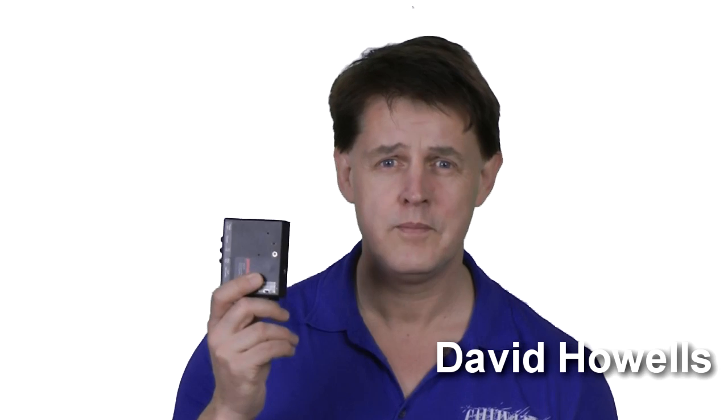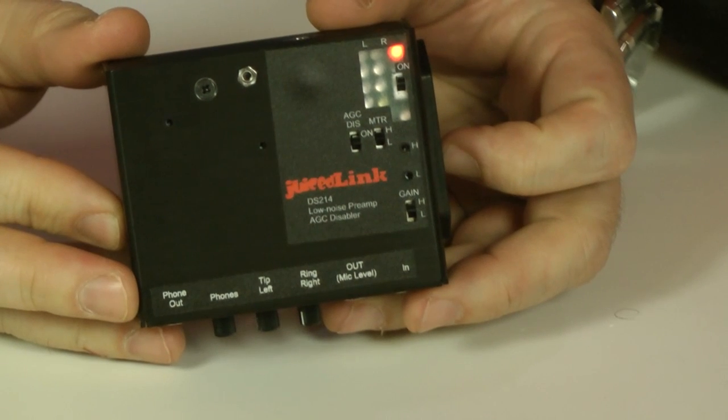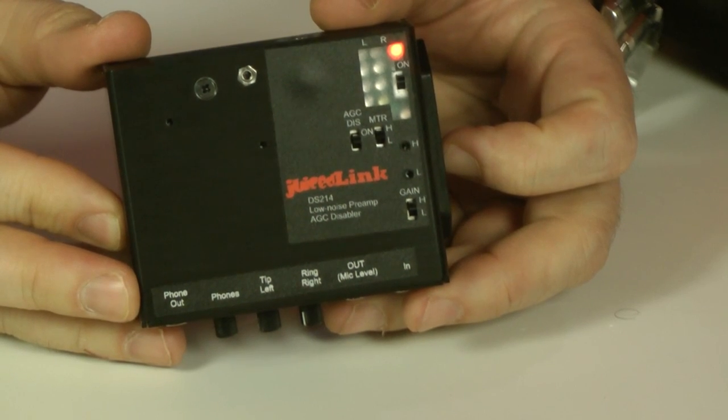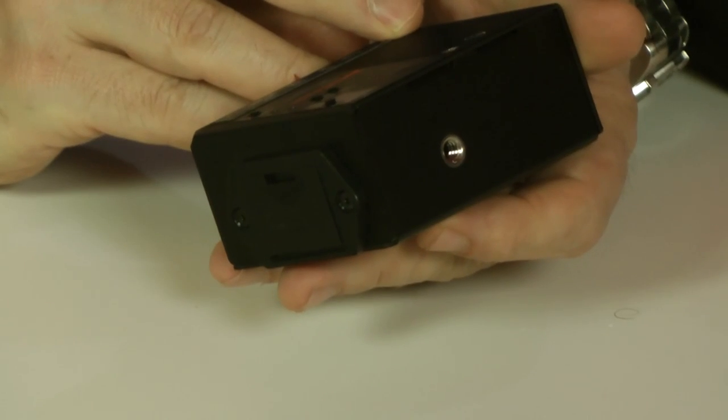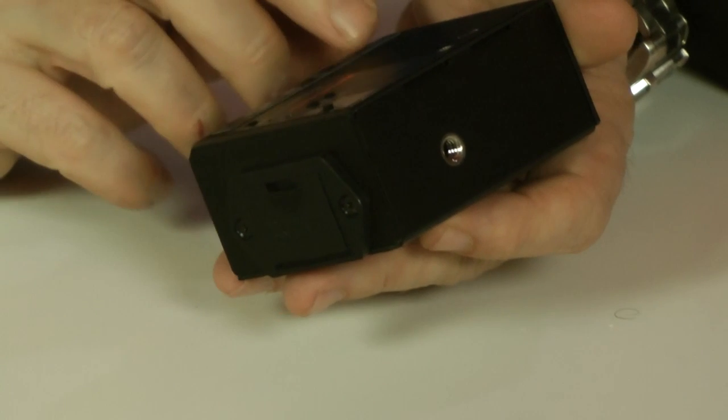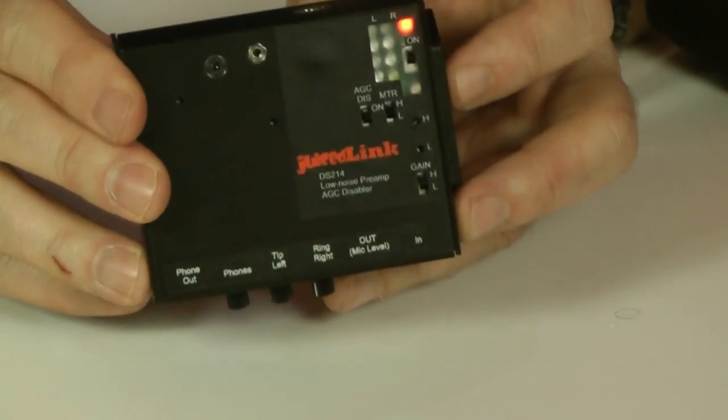Okay, hi there. We're going to have a quick look in depth, just closely now, at this Juicelink box. This is the Juicelink box preamp, one I've been talking about. It's the DS214 Low Noise Preamp and AGC Disabler. See it there.